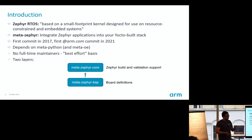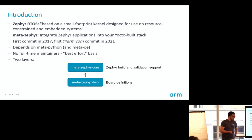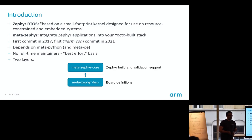MetaZephyr is the integration layer we have contributed to. Looking at the git log, the first commit is from 2017, the first ARM commit was a couple of years ago, and our team started contributing last year. It depends on MetaPython because the Zephyr build process uses many Python libraries. There are no full-time maintainers — it's best effort. There are two layers: MetaZephyr core, which has most of the recipes for building Zephyr, and MetaZephyr BSP, which is mainly machine configurations.